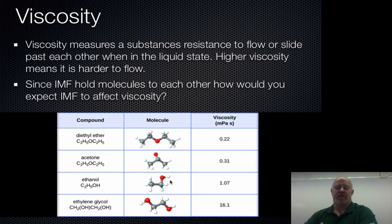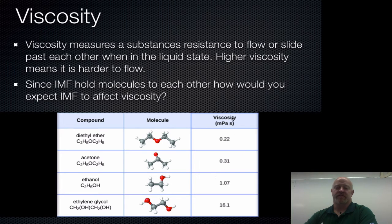Ethanol is a polar molecule with hydrogen bonding, and ethylene glycol is a polar molecule with hydrogen bonding as well. Ethanol has a single spot for it to hydrogen bond, where ethylene glycol has two locations that allow hydrogen bonding, so it has a bigger hydrogen bonding effect. So we end up getting higher viscosity as a result. Once again, the higher your intermolecular force or the better you are at holding things together, the higher the viscosity.